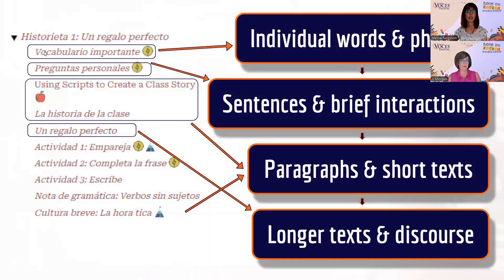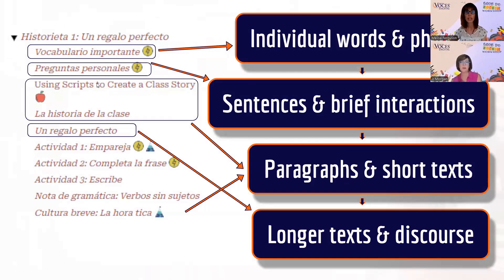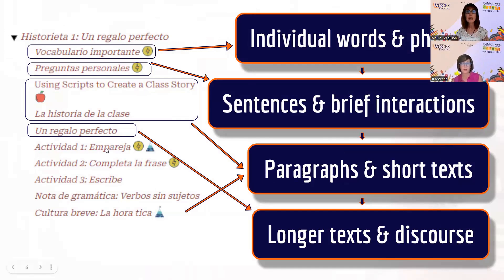Breaking down a story: you start with a vocabulary page presenting words and phrases, then work up to sentences and brief interactions with personal questions. After that comes the class story — you create it together, and students read it, working up to paragraphs and short text. Then comes the story itself, which presents vocabulary in a longer text with discourse and conversations. You reinforce everything with activities and wrap up with a short culture reading, presented in paragraphs and short texts, easy enough for students to read independently.